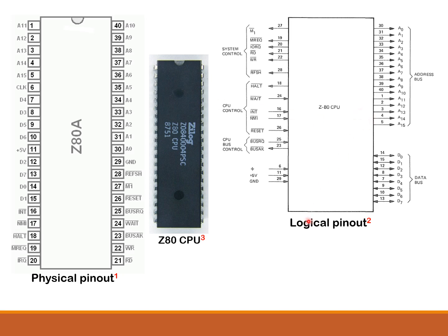On this side is a logical pin-out. In the logical pin-out diagram, the signals are grouped logically. For example, here we have the address signals in one group, the data signals in another group, and all the control signals grouped together. And here is the clock signal and the power pins of the Z80.